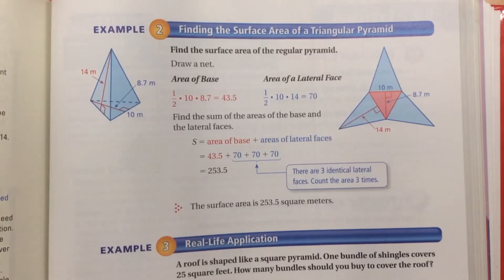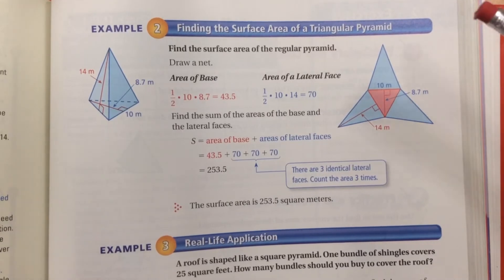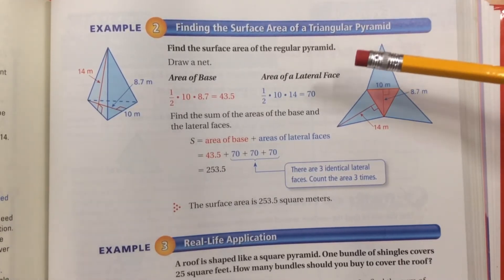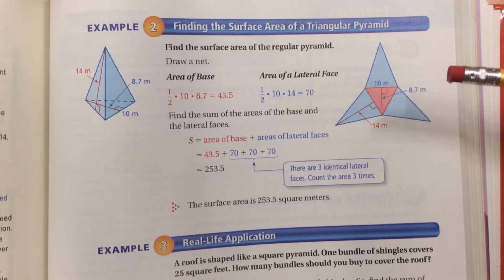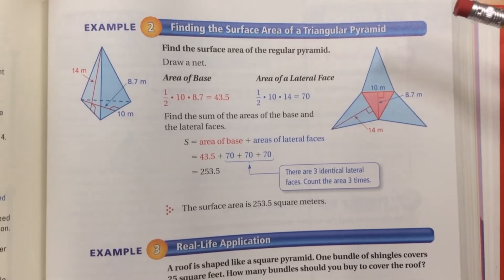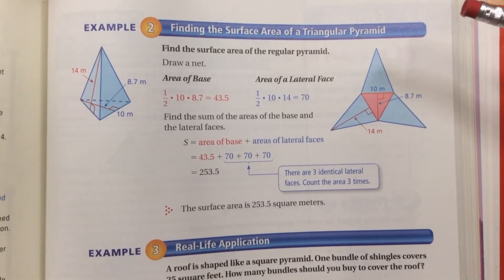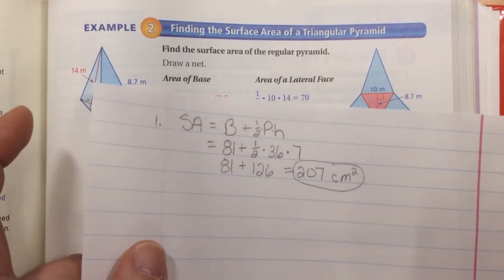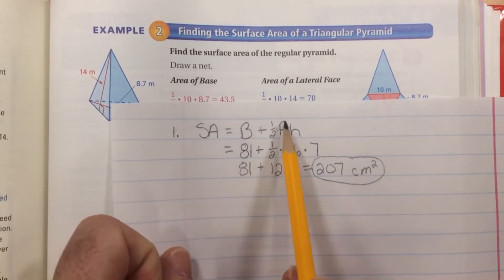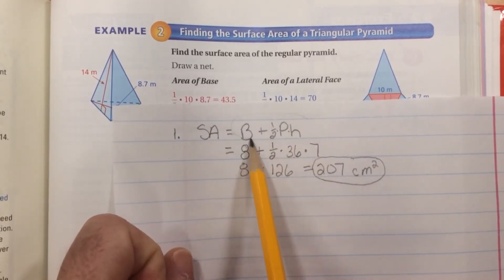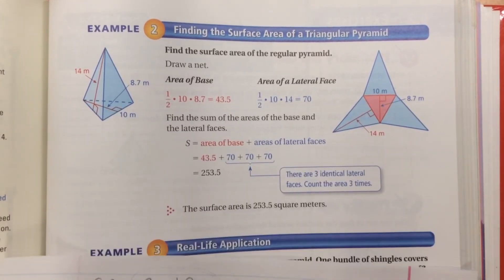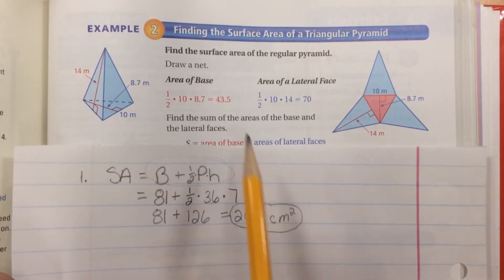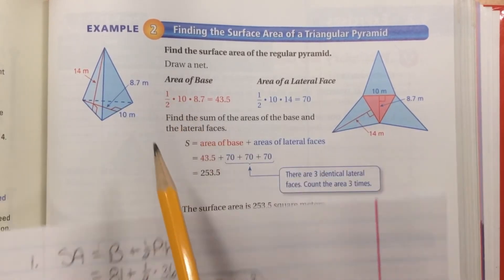Now on page 365, they introduce finding the surface area of a triangular pyramid, and we're going to use the exact same formula. So let's look at their example.